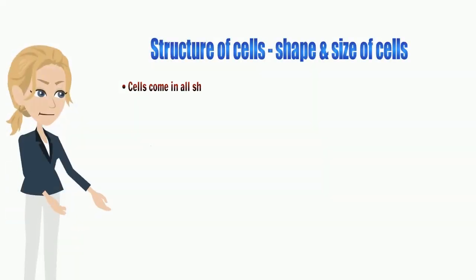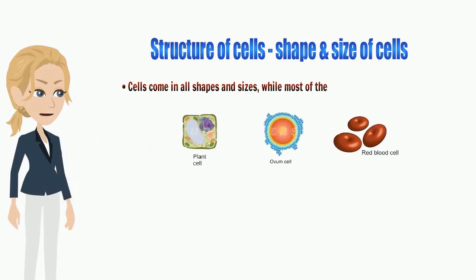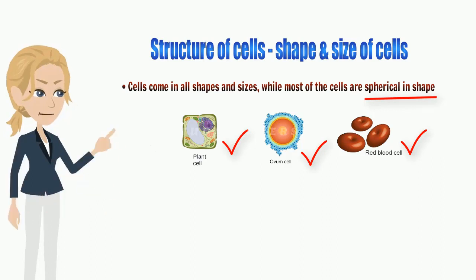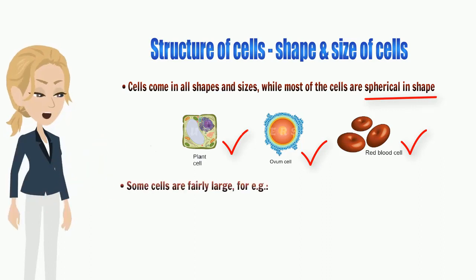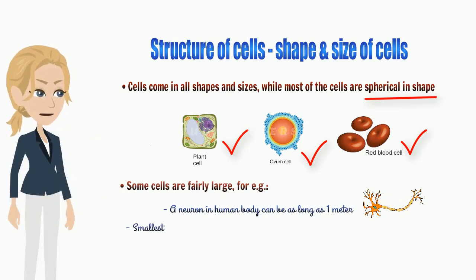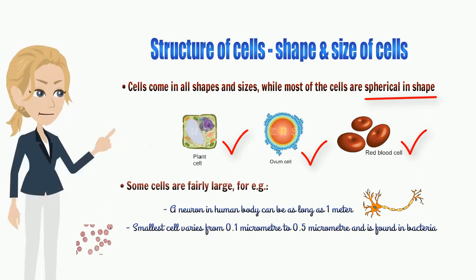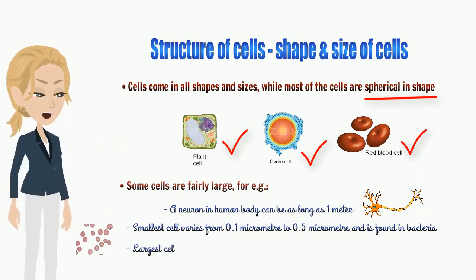Cells come in all shapes and sizes. While most of the cells are spherical in shape, most of the cells are microscopic in size. Or we can say, it is impossible to see them with naked eyes. Some cells are fairly large. For example, a neuron in human body can be as long as 1 meter. The smallest cell varies from 0.1 micrometer to 0.5 micrometer and is found in bacteria. On the other hand, the largest cell measures 170 mm by 130 mm and is the egg of an ostrich.